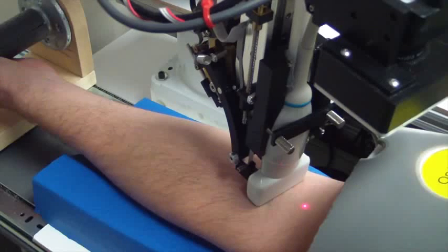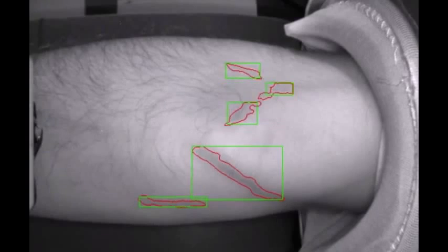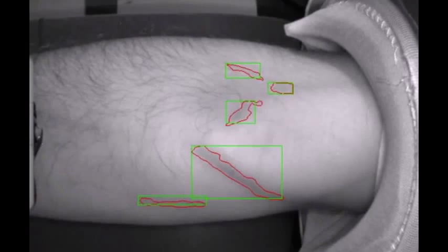After the patient puts his arm through the archway, an infrared light illuminates his inner elbow for a camera. Software matches what the camera sees against a model built from thousands of vein images, looking for a suitable vein.